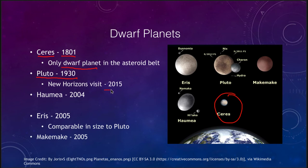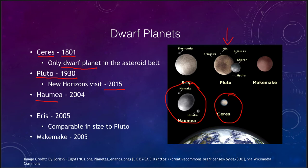Pluto was visited in 2015 by the New Horizons spacecraft, which gave us an up-close look for the first time. The other dwarf planets — Haumea, Eris, and Makemake — are all out in the Kuiper belt. Note that Haumea is ellipsoidal rather than spherical. Eris is comparable in size to Pluto, while Makemake is slightly smaller, as shown in the scale drawing here.